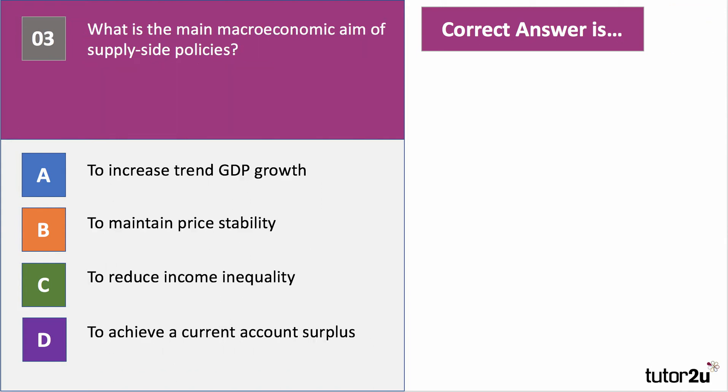Question three: what is the main macroeconomic aim of supply side policies? Supply side policies can have several aims, but the right answer is A — to increase the trend rate of growth in the economy and try to increase a country's productive potential.